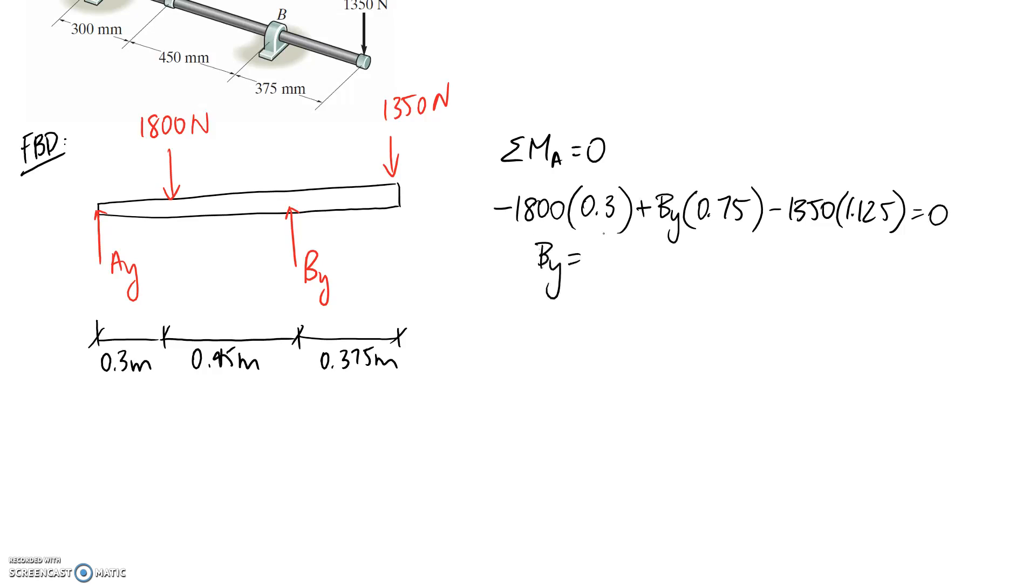So By comes out to be 2745 newtons. So now we just need to go and find Ay, which we can get most easily by summing forces in the Y direction. So Ay is up, 1800 down, 2745 up, and 1350 down. So it corresponds to your reaction at A being 405 newtons.